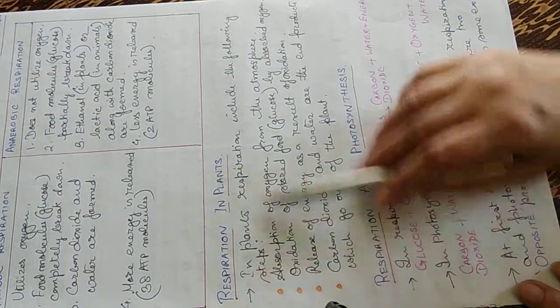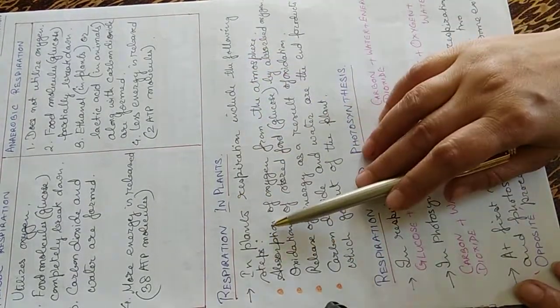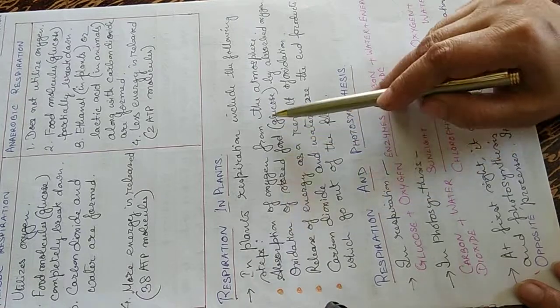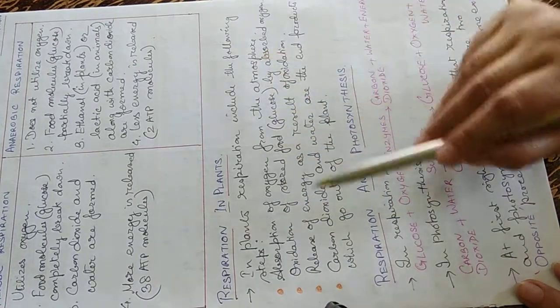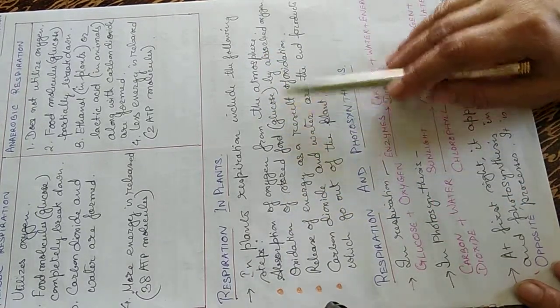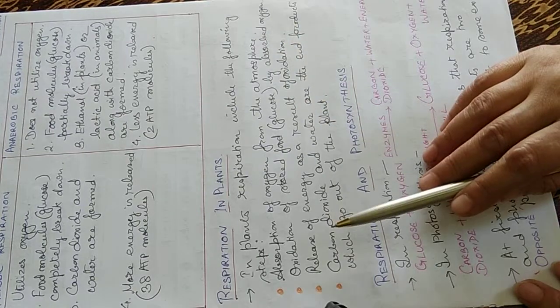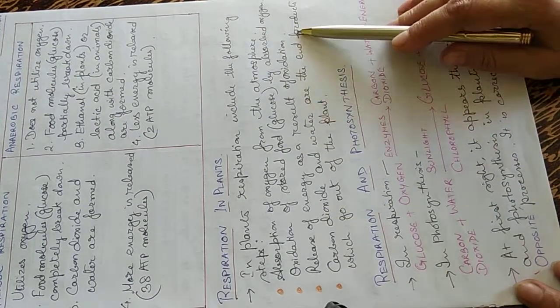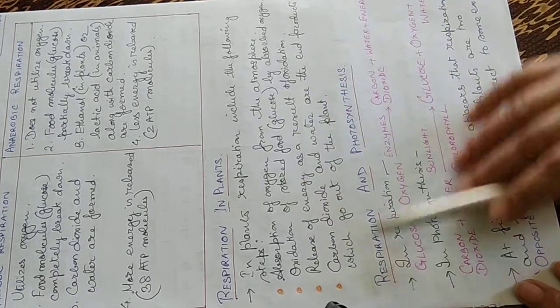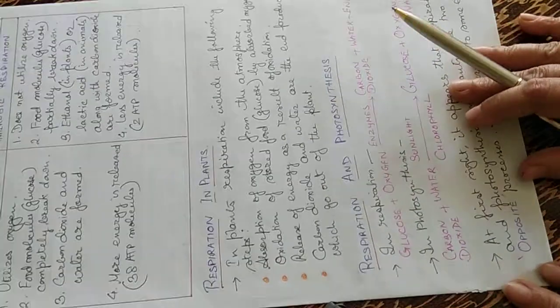Now in plants, respiration includes the following steps. Absorption of oxygen from the atmosphere. Oxidation of the stored food by absorbed oxygen. Release of energy as a result of oxidation. Carbon dioxide and water are the end products which go out of the plant.